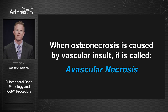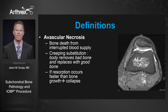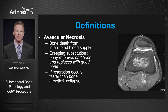To clarify with simple sentences: when osteonecrosis is caused by a vascular insult, we call that avascular necrosis. Avascular necrosis is a subset of osteonecrosis, but not all osteonecrosis is avascular necrosis. Avascular necrosis is bone death from interrupted blood supply — the body removes the dead bone and replaces it with good bone through creeping substitution. If resorption occurs faster than bone growth, we see collapse of that joint. That is why we distinguish early-stage from late-stage avascular necrosis based on joint collapse.